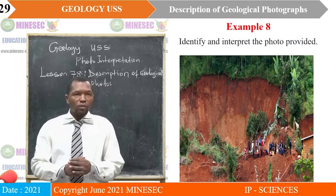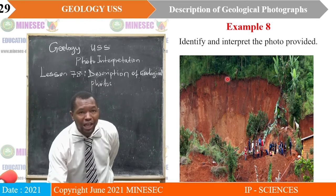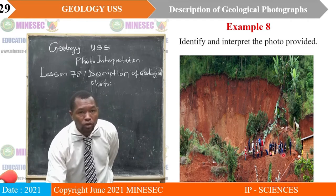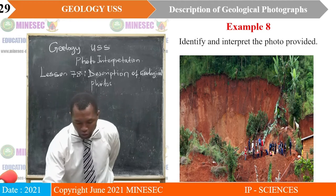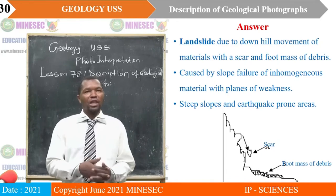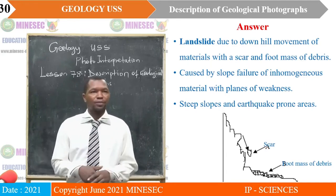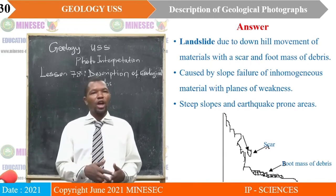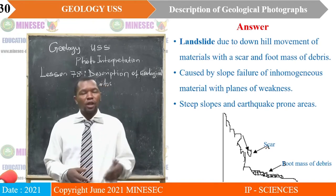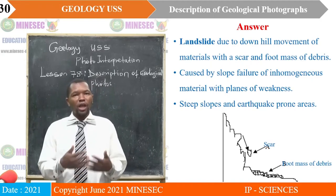Example eight: identify and interpret the photo provided. If you look at this photo, you realize there is a scar, and on that scar you have material that is domed at the foot — possibly screes and talus. When we have a scar and a foot of domed material, we conclude on landslide. It is due to the downhill movement of materials with a scar and foot mass of debris. It is caused by slope failure of inhomogeneous material with planes of weakness, very common in steep slopes and earthquake-prone areas.